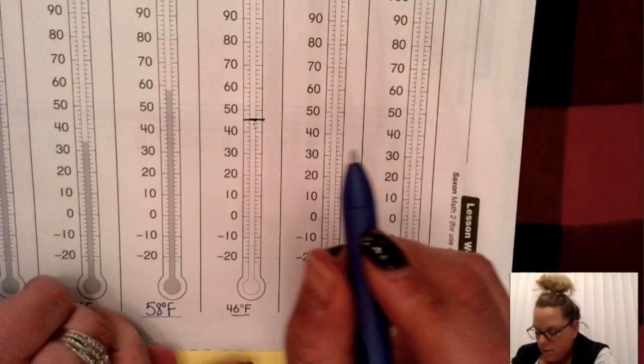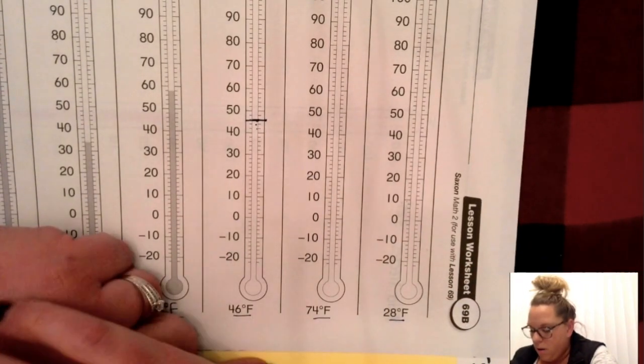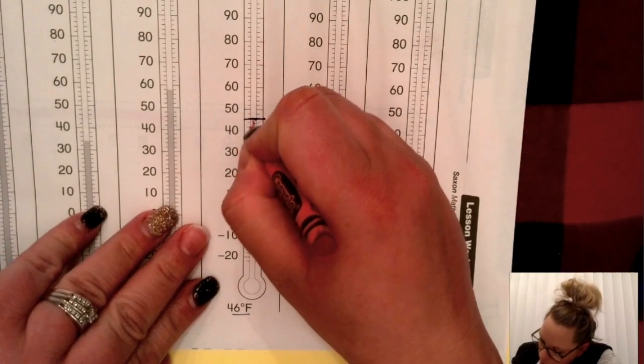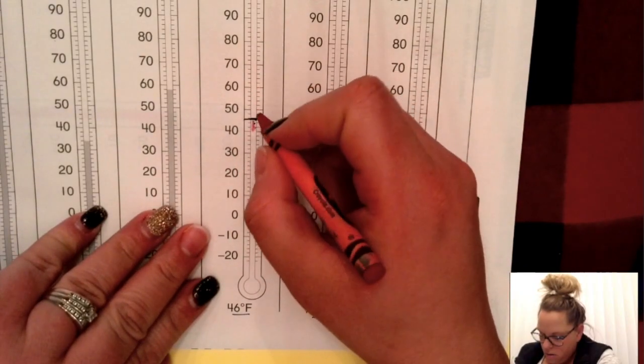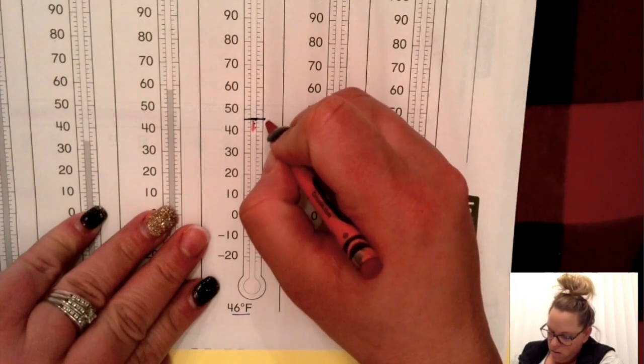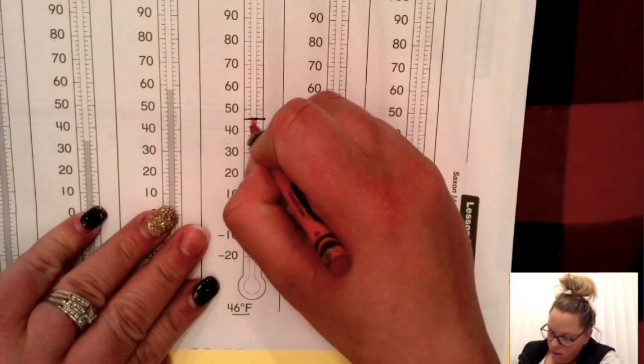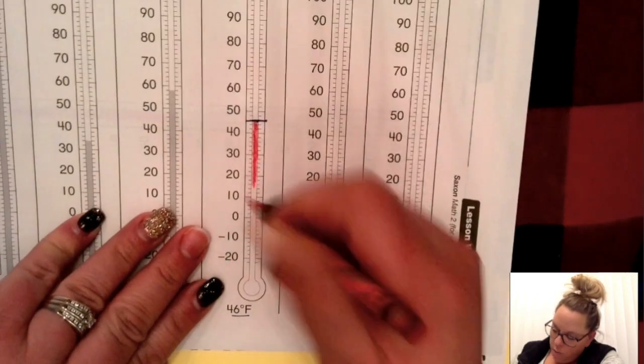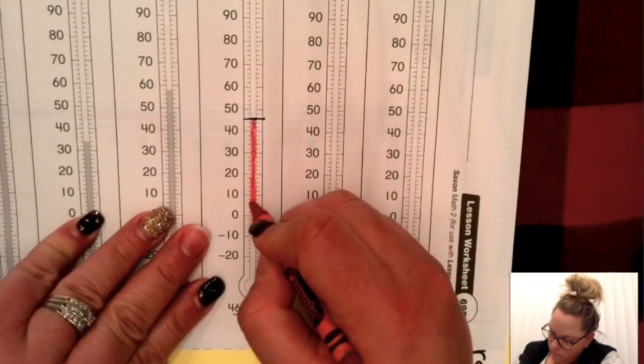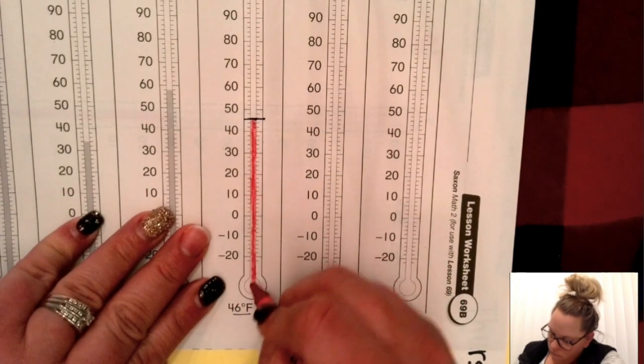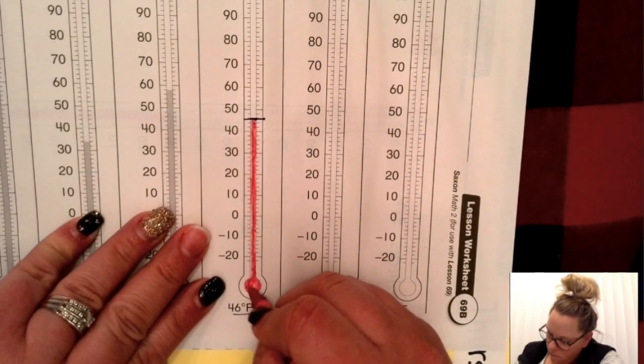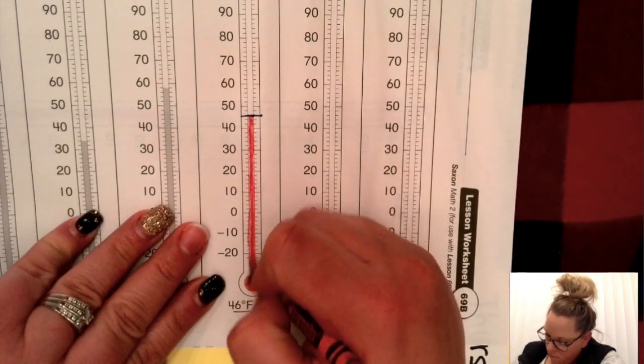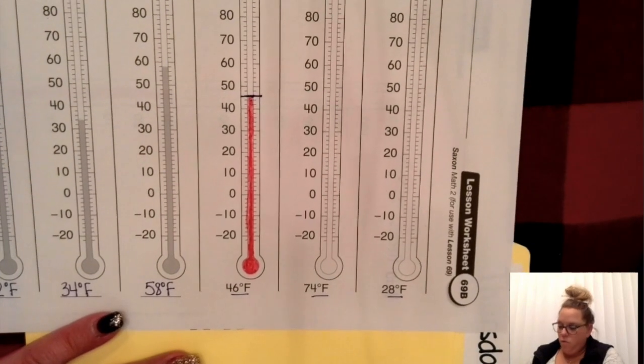If you want to make it like this so it's easier for you to see for right now, that's okay. Then you're going to shade it in. You're welcome to either use your pencil or you can use a red crayon.